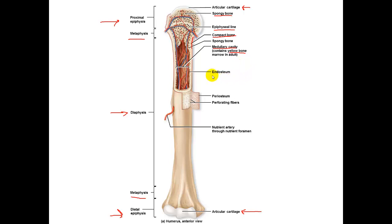On the inside of the medullary cavity we have the endosteum, which is the lining of the medullary cavity. In this lining you have the typical bone cells — the osteoprogenitor cells that can give rise to osteoblasts, osteoclasts, and osteocytes. On the outside edge we have the periosteum, which is the outer covering. It has the same cells as well, and we have perforating fibers that help connect the periosteum to the underlying bone tissue.